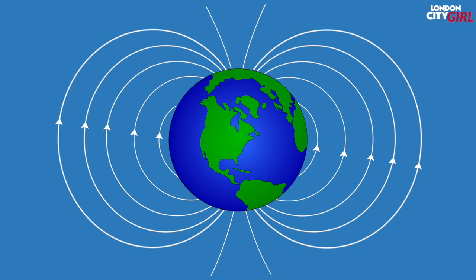Our planet's rotation and molten iron nickel core gave rise to a magnetic field which protects the Earth from solar and cosmic particle radiation. This magnetic field also prevents the erosion of our atmosphere by solar wind. The magnetic field is what causes compass needles to point to the north pole regardless of where you are, but every few hundred thousand years a magnetic reversal takes place and after the next switch is completed compass needles would point to the south pole instead.